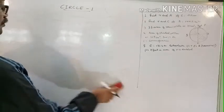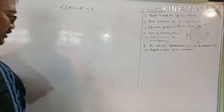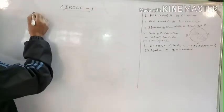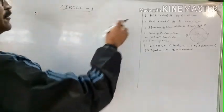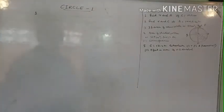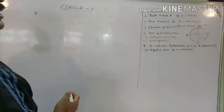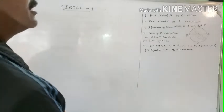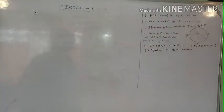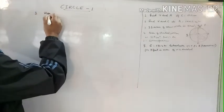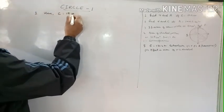In mensuration you must know the formulas by heart, then only you will be able to solve the problems. Note down these formulas and learn them. Now let's take some questions to see the applications. Question one: find the radius and area of a circle if its circumference is 18π centimeters.